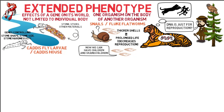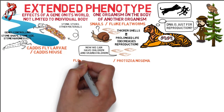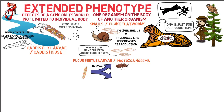Other examples include the protozoan parasite Nosema, which manufactures chemicals in the host flower beetle larvae, preventing them from turning into adults. The larvae grow into giants twice the size of normal adults, where Nosema parasites can continue to live, and this gigantism is an extended phenotype of Nosema's genes.